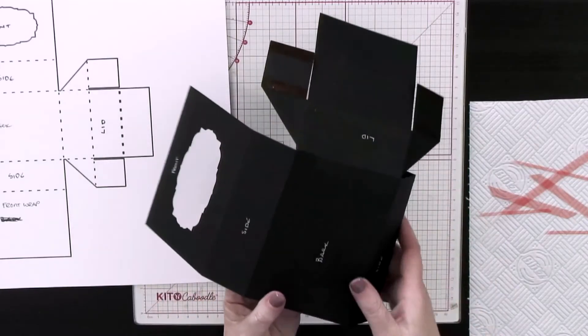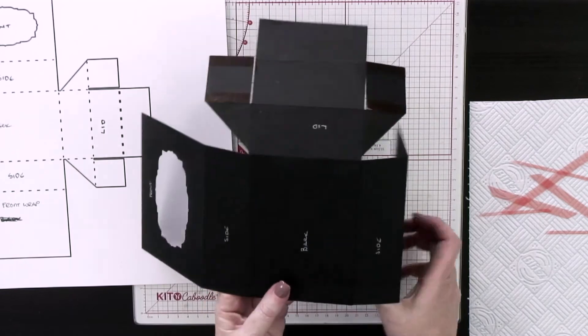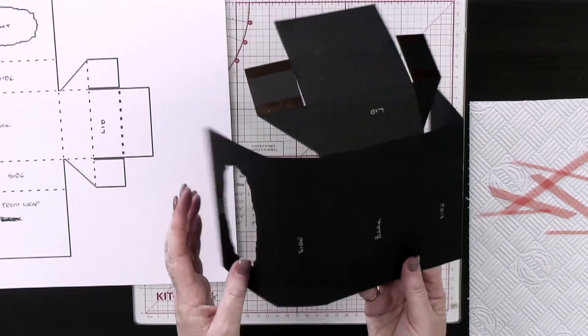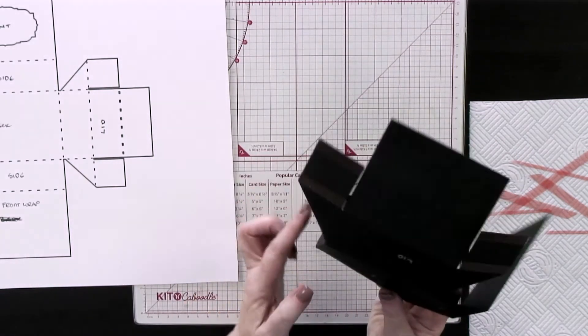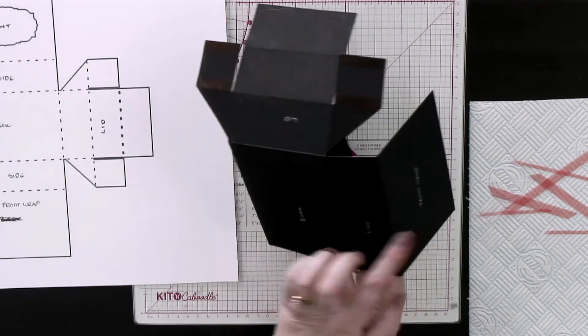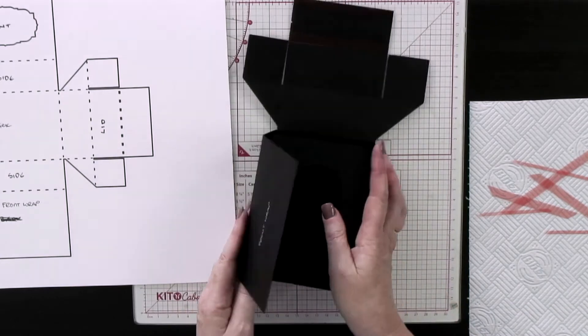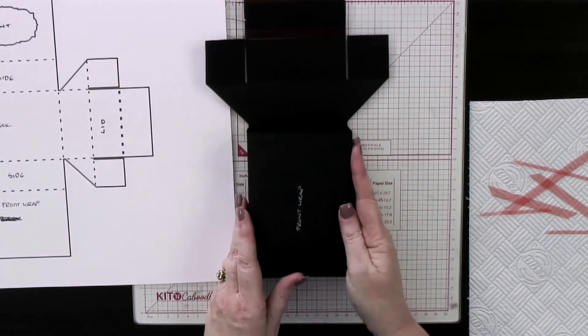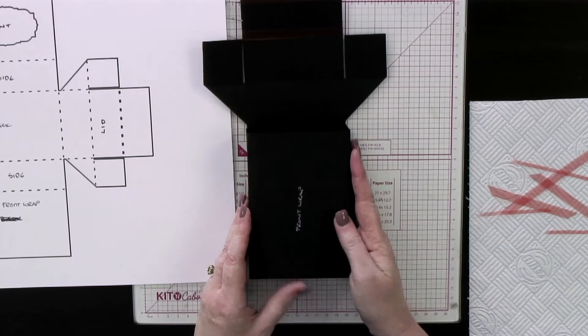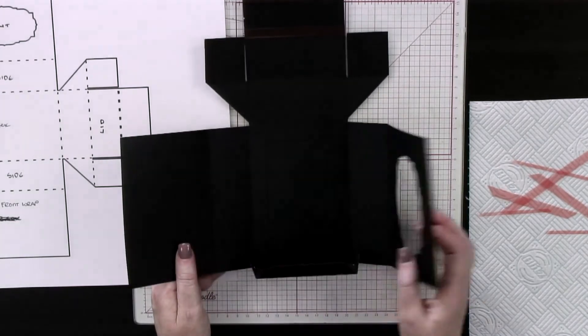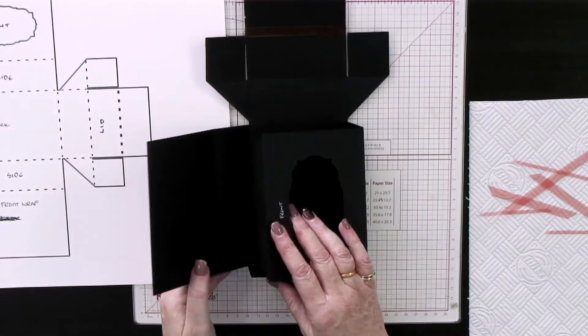What I'm going to do now is fold my box into place. So the front and then the side and then the back and then the side and then that's the front wrap.